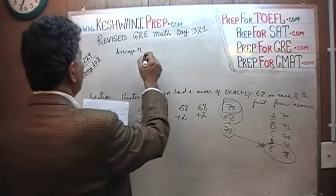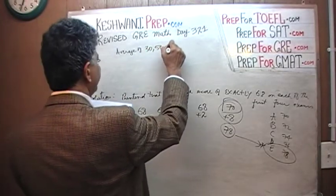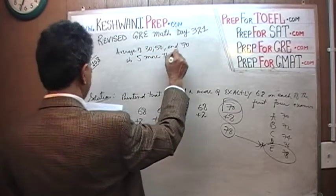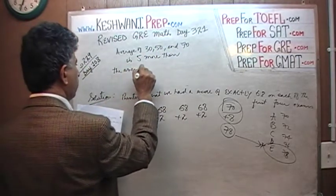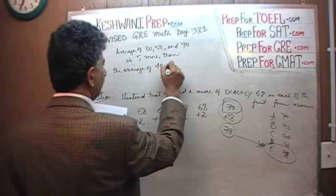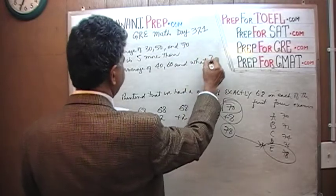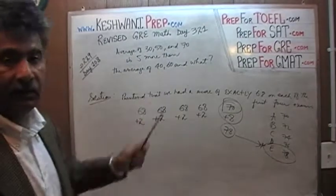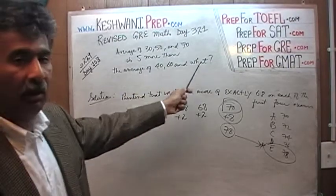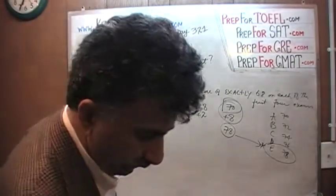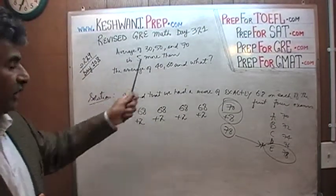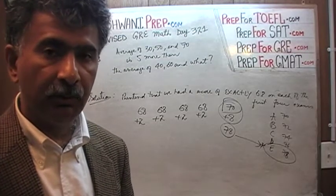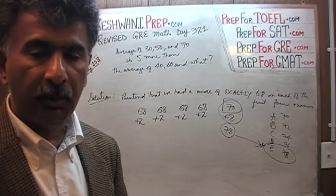Let's do the next one. We are told that the average of 30, 50, and 70 is 5 more than the average of 40, 60, and some unknown number X. Very straightforward, very simple question. Pause the video, solve this problem yourself any which way you want — classical or non-classical — then resume and compare your work against what we are about to do together.